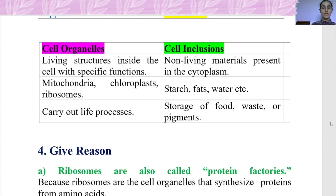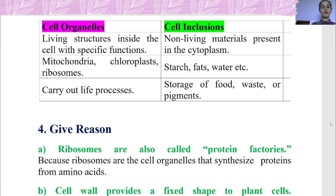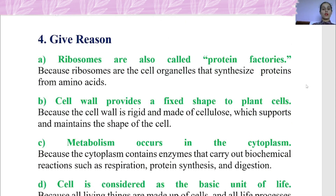Next is the difference between cell organelles and cell inclusions. Cell organelles are living structures, such as mitochondria, chloroplast, and ribosomes. Cell inclusions are non-living structures such as starch, fats, and water. Ribosomes are the cell organelles that synthesize protein from amino acids.